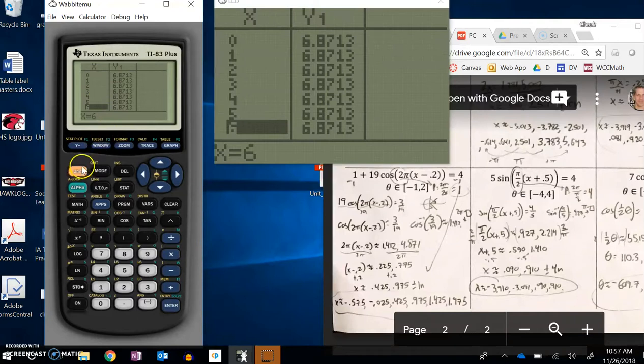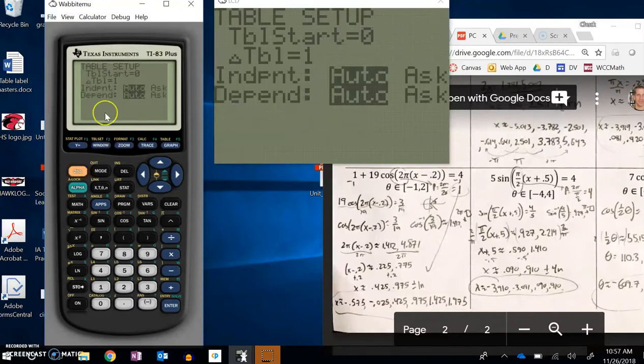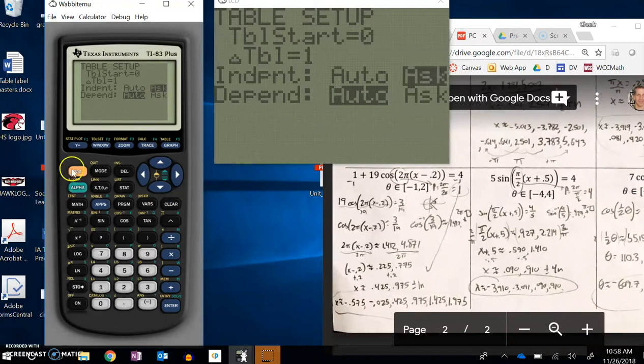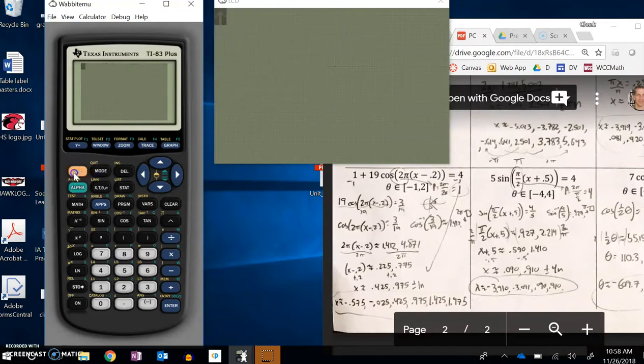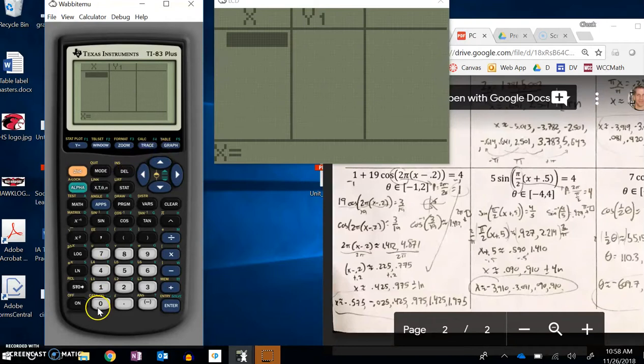I can get that here in table set. I'm going to go second window, which gives me table set. That independent variable, that input variable, I'm going to scroll over and change that to ask. Now when I go back and look at my table, I can enter in values.